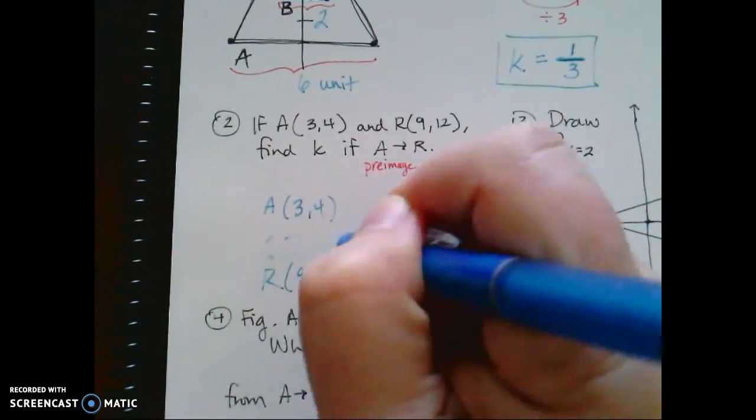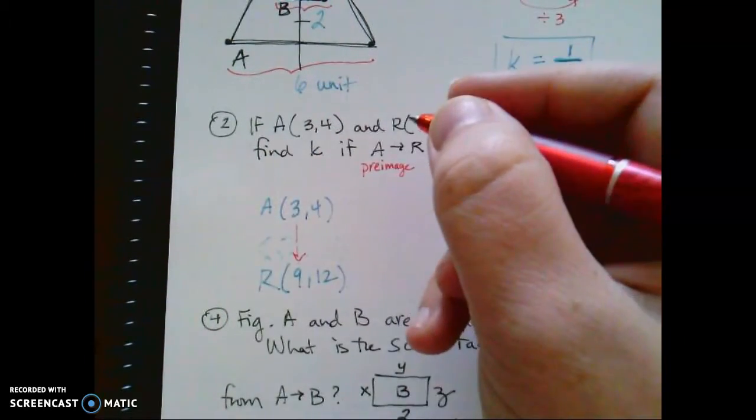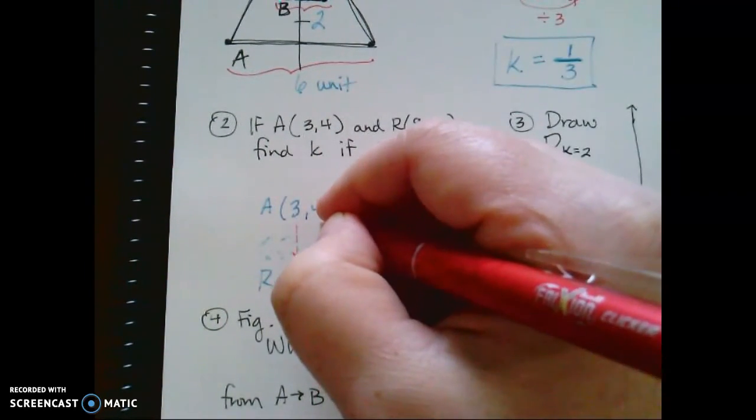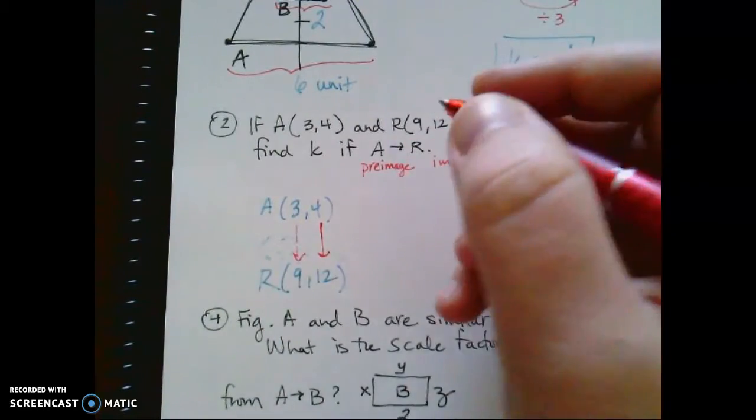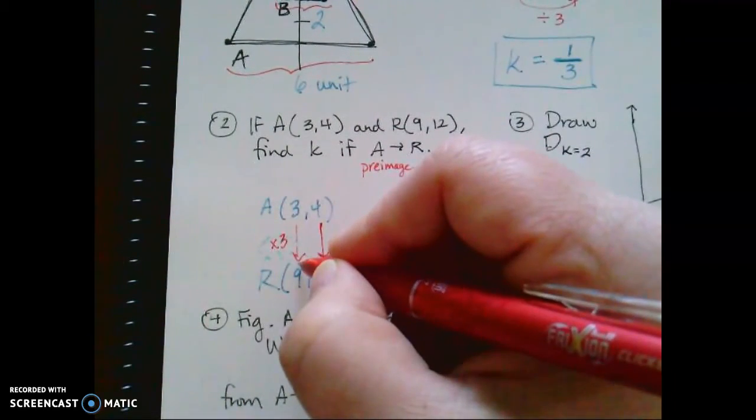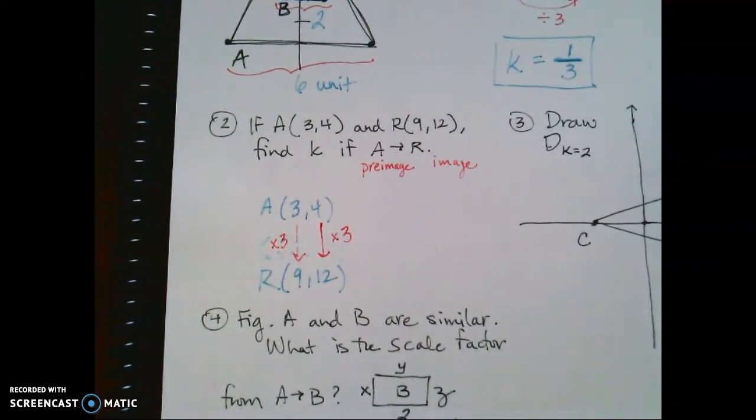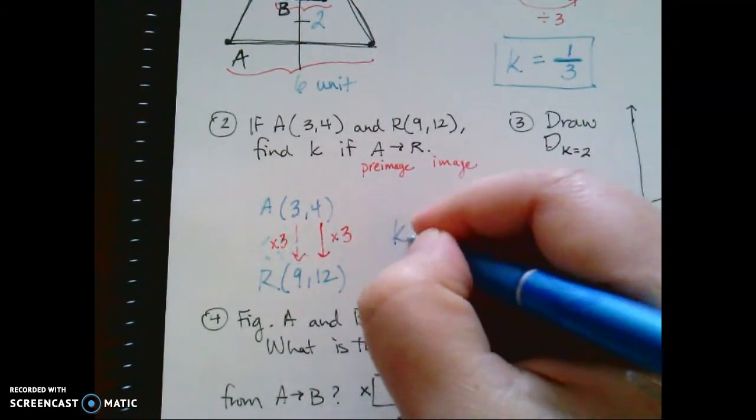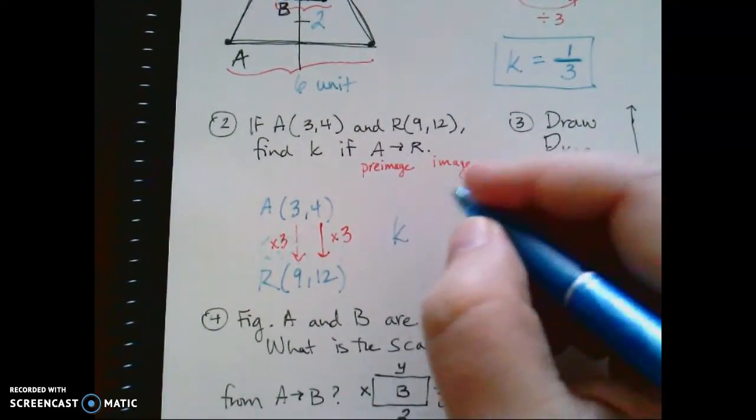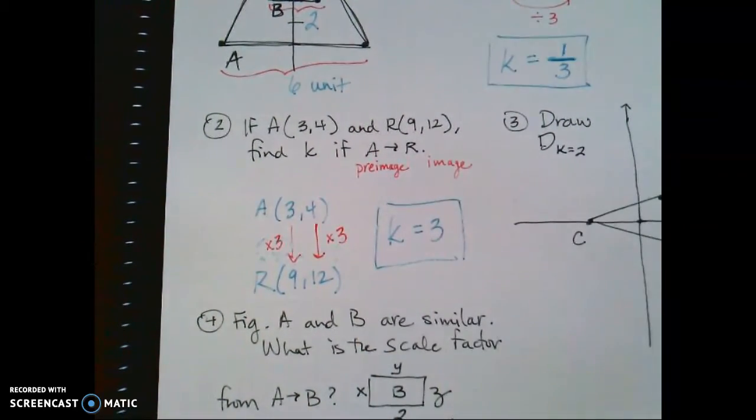R is 9-12. Okay, mathematically, what do we need to do to go from 3 to 9? Mathematically, what do we need to go from 4 to 12? In each case, the x coordinates you would multiply by 3. The y coordinates you would multiply by 3. So our scale factor, since both x and y coordinates are multiplied by 3, the scale factor is 3.